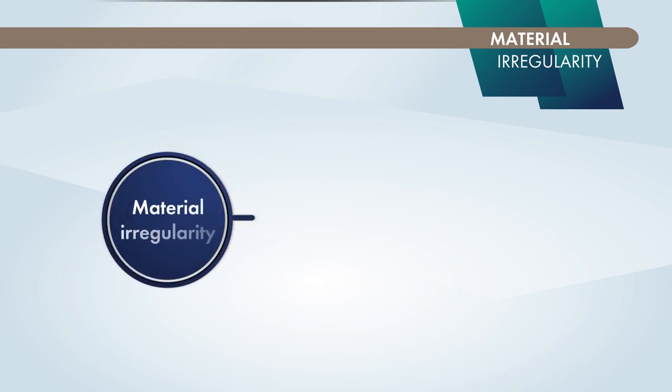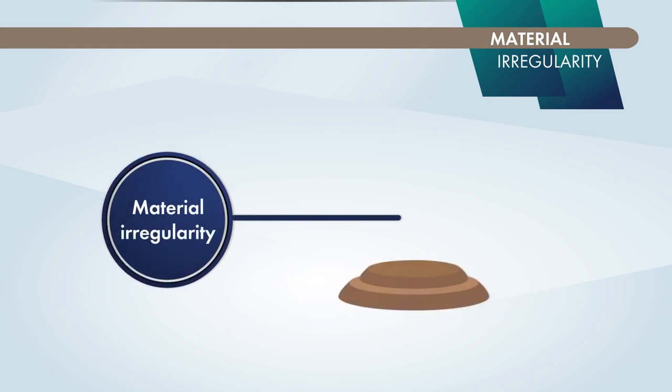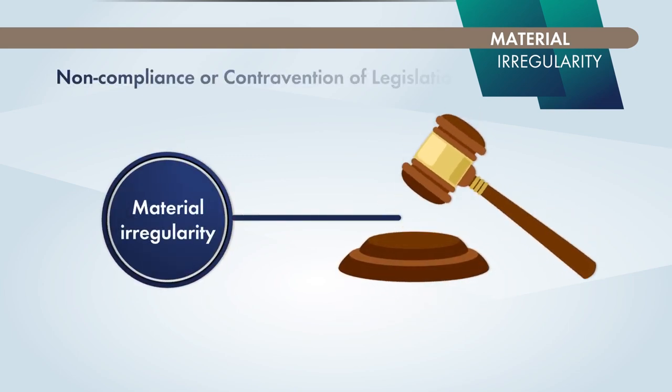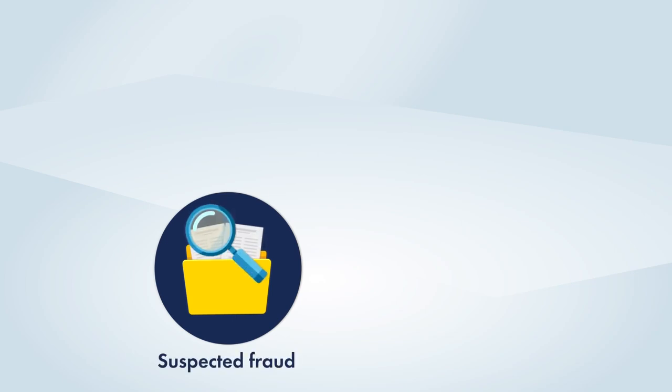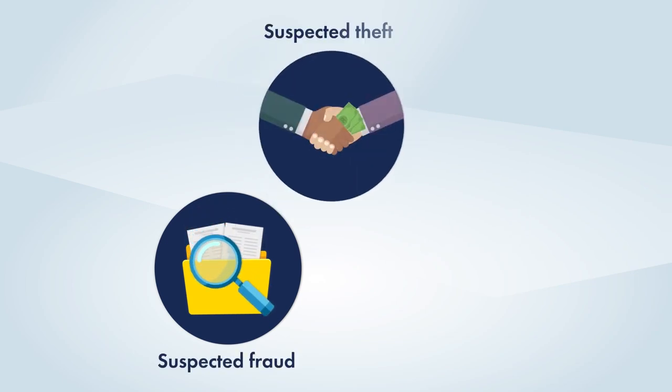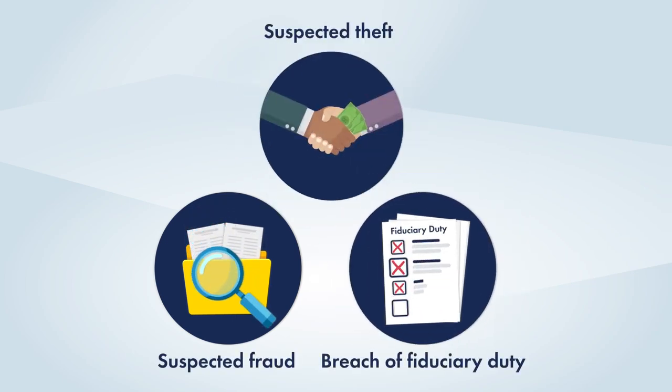Now, let's explore material irregularity. Like irregular expenditure, material irregularity also starts with the non-compliance or contravention of legislation, but extends further. It can be applied to suspected fraud and suspected theft, as well as breach of fiduciary duty.